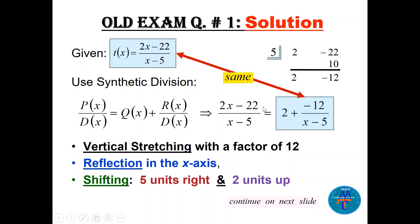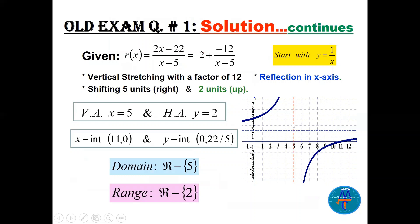So instead of the given function t, we can write: 2 (the quotient) plus the remainder -12 divided by (x - 5). We can see vertical stretching by a factor of 12, reflection in the x-axis because of the minus, 5 units to the right from (x - 5), and 2 units up. Starting with 1/x and applying all these transformations, the vertical asymptote is x = 5 and the horizontal asymptote is y = 2. We can easily find the x-intercept and y-intercept.